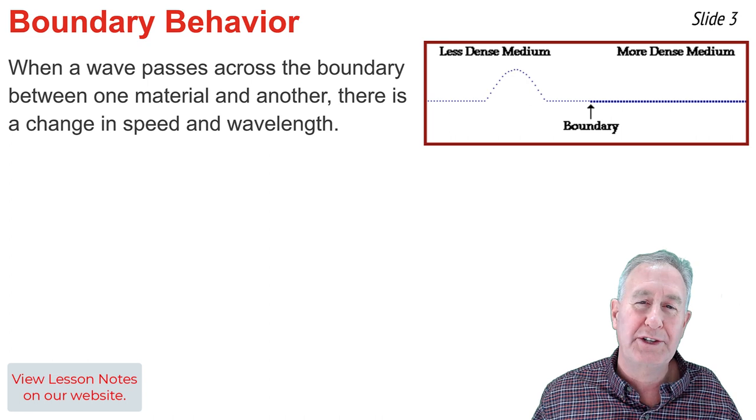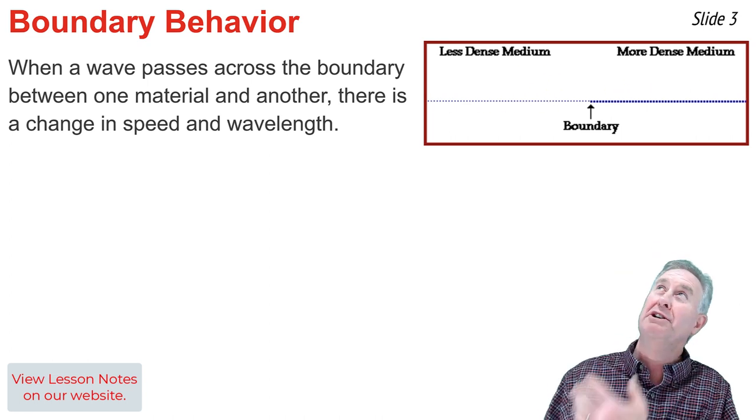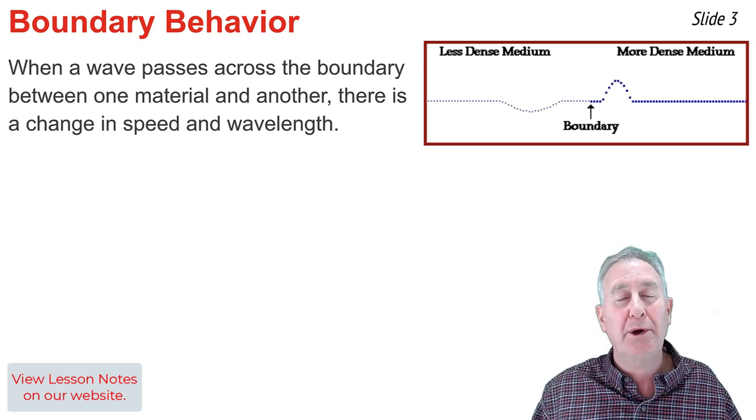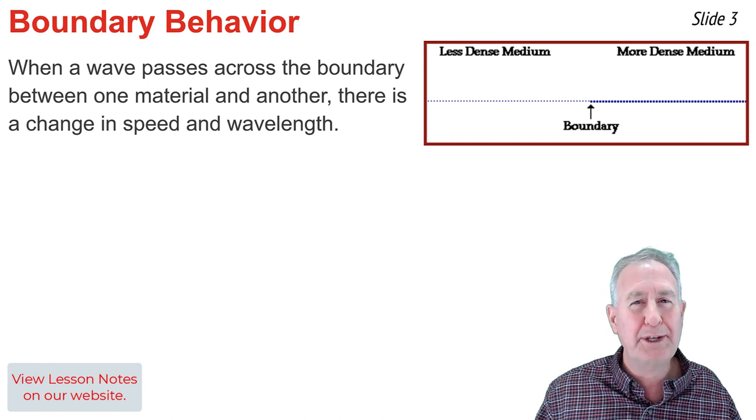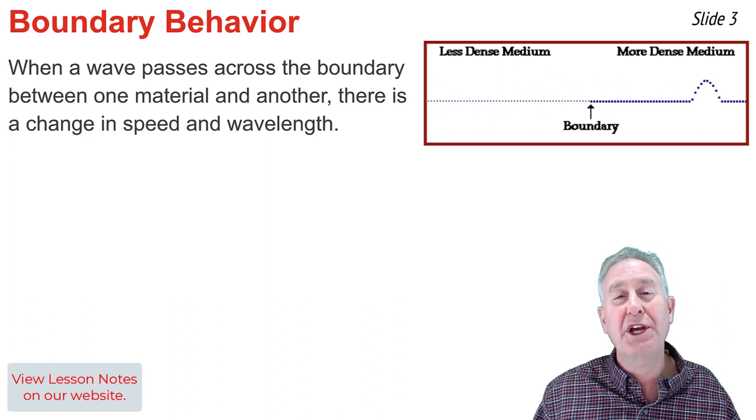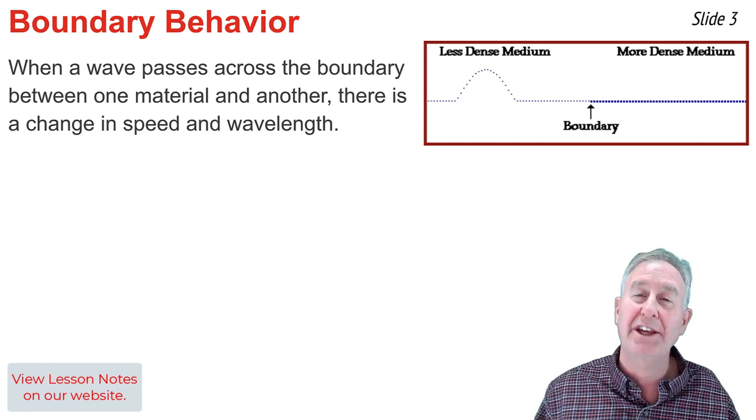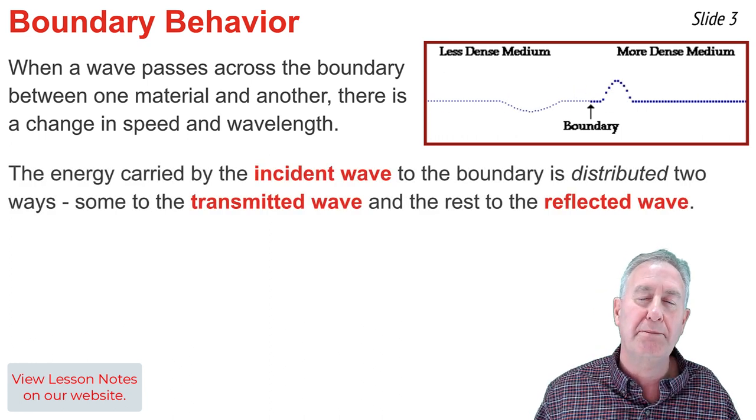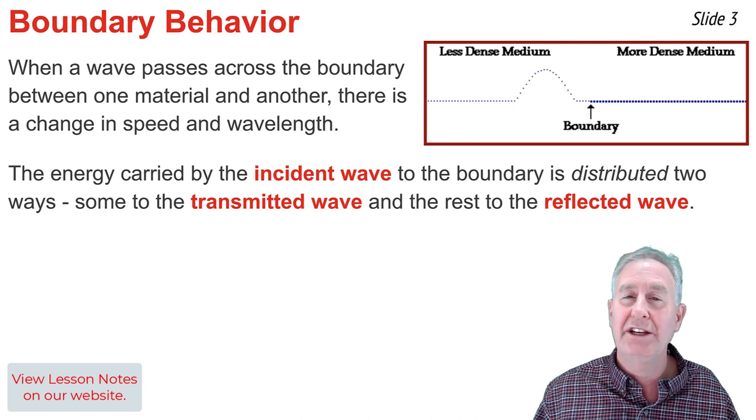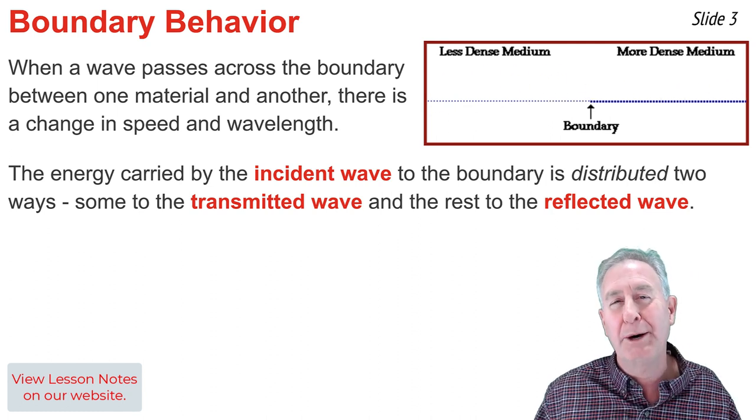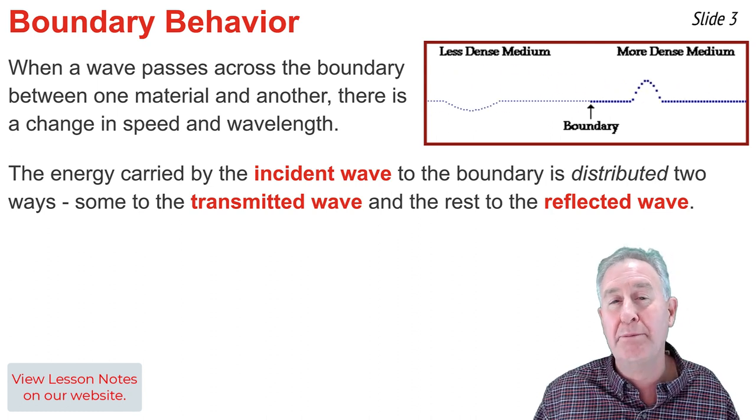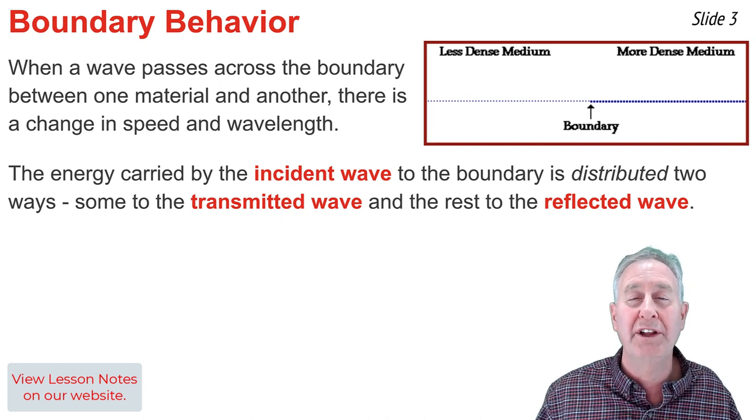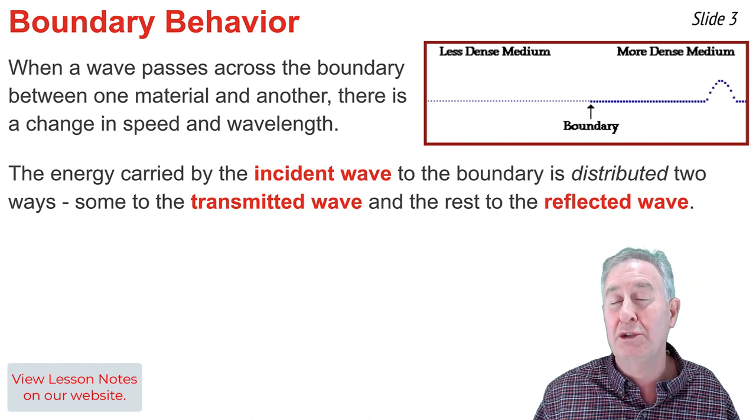In our video tutorial series on vibrations and waves, we discussed boundary behavior. When a pulse crosses the boundary between one material and another material, there is a change in speed and a change in wavelength as shown in the animation. We can think of the energy of the incident wave being carried to the boundary, and at the boundary it's distributed in two different ways. A portion of the energy is reflected off the boundary and remains in the original material, and a portion is transmitted into the new material.